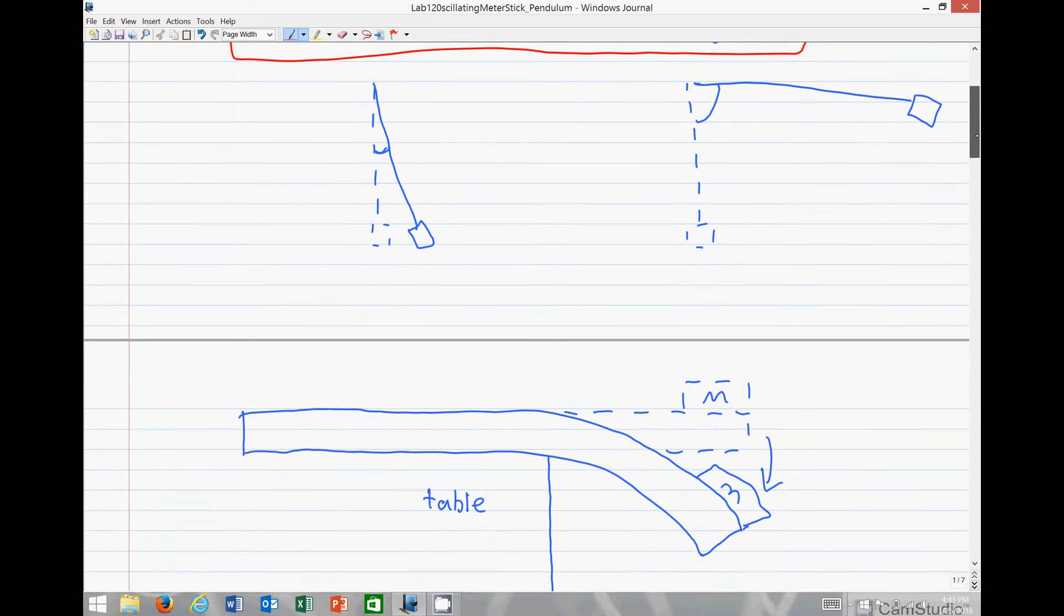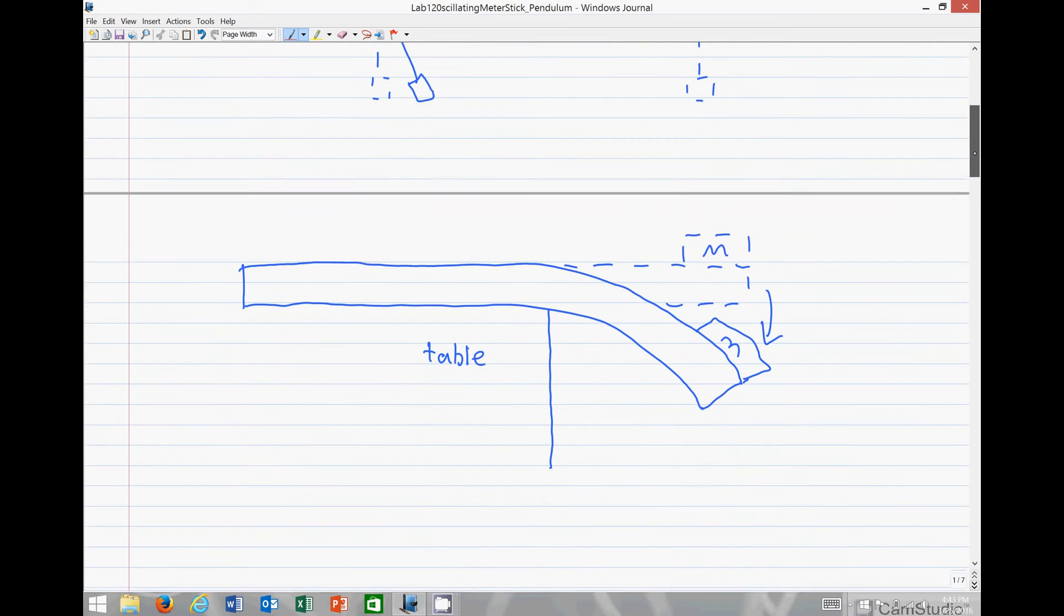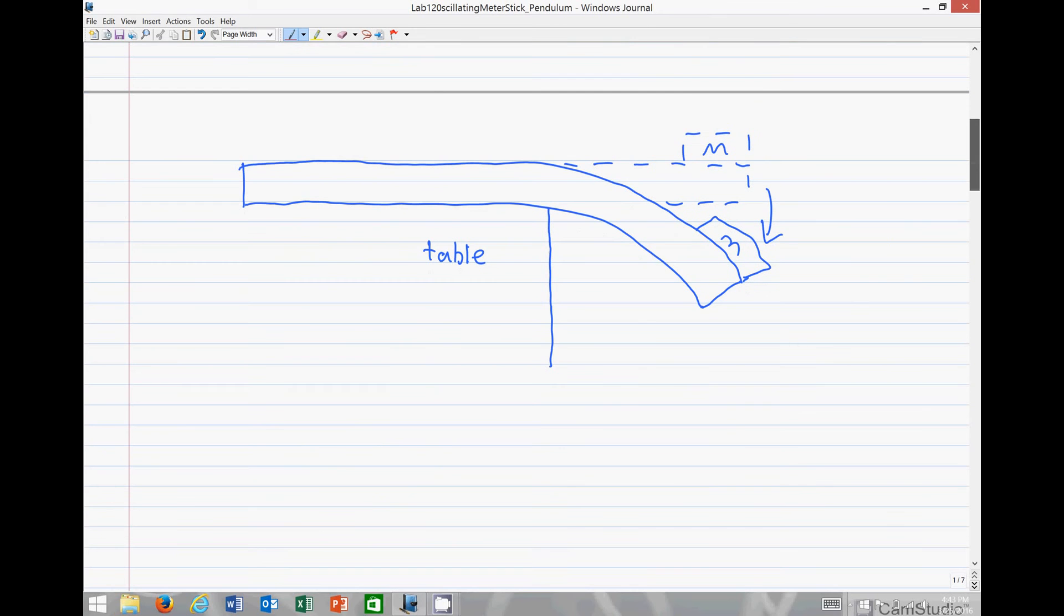Following the lab's instructions, we have something that resembles this, where a meter stick is hanging partially off a table. A mass has been placed onto the meter stick, and it has sagged to a new position.